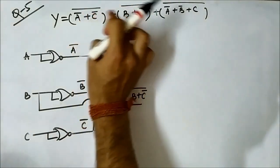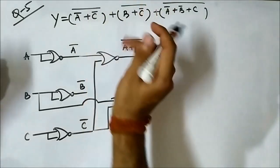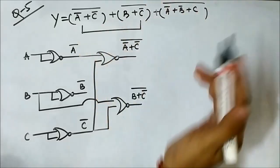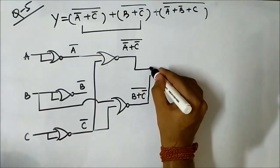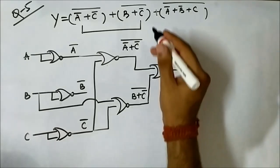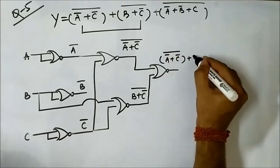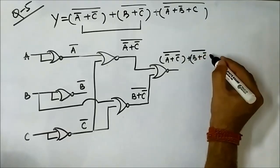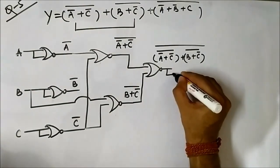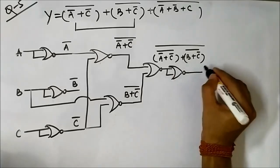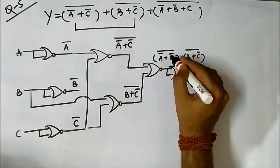Then we combine these two terms — (A' + C')' and (B + C̄)' — by passing them through a NOR gate to get [(A' + C')' + (B + C̄)']'. If we then pass that signal through another NOR gate, the outer complement is removed, giving us (A' + C')' + (B + C̄)', which is the first portion of our expression.